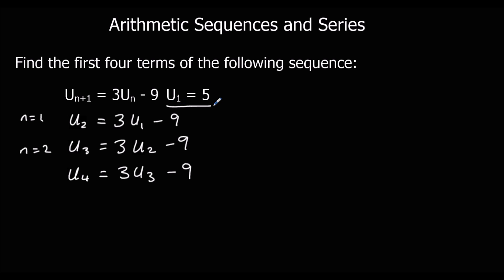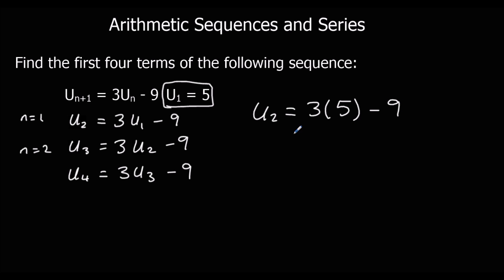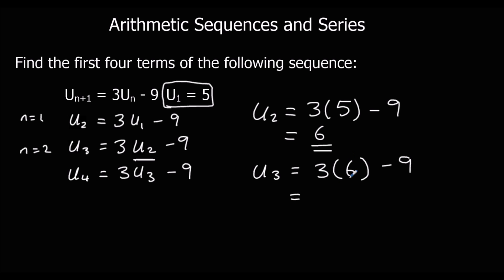They've told us the first term is five, so we've got to find the second term. For the second term, we're going to have three lots of the first term — three fives — take away nine. Three fives are fifteen, take away nine is six. So that's the second term. Then once we've worked that out, we can substitute it in. So the third term is three lots of six, take away nine. So eighteen take away nine is nine.